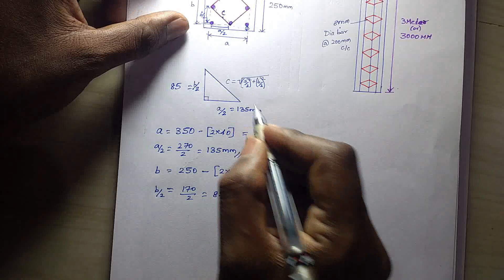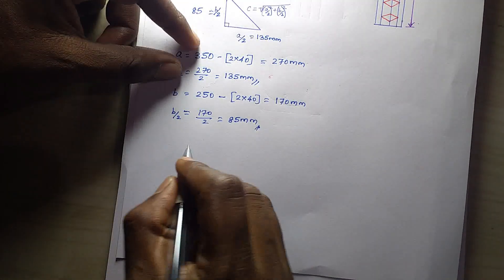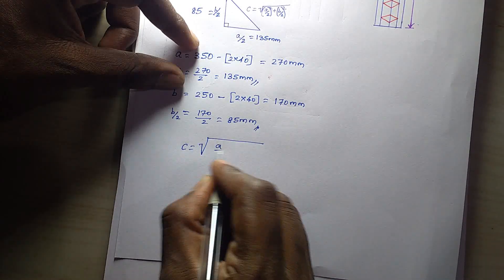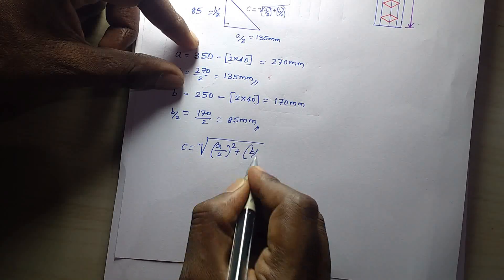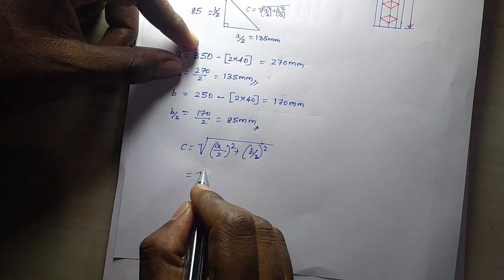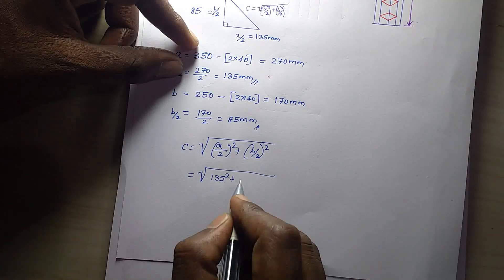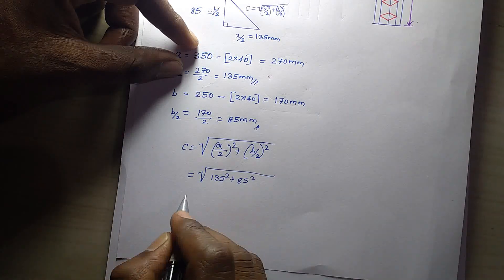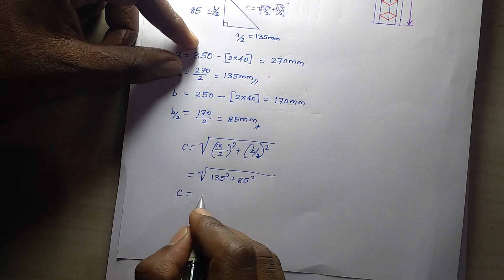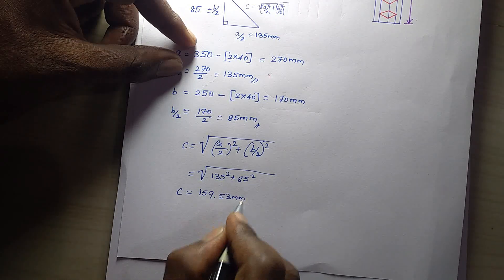Now c value we have to write. So c equals root of (a by 2) squared plus (b by 2) squared. So a by 2 value is 135, next is 85. C value is 159.53mm.